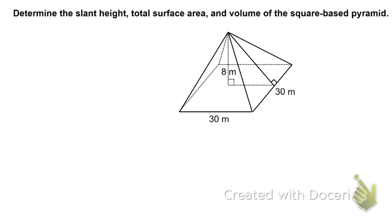Let's try a harder example now. Here we have another square pyramid, and we are going to find the volume, the slanted height, and the surface area. Slant height is the height used to find the total surface area — it is the height of the actual triangular face. Versus the 8 meters, which is the actual height of the pyramid, which is what we use for volume. So: the height we use for volume; the slanted height we use for total surface area.